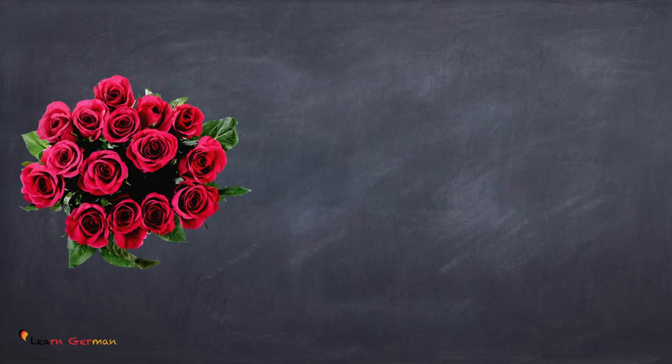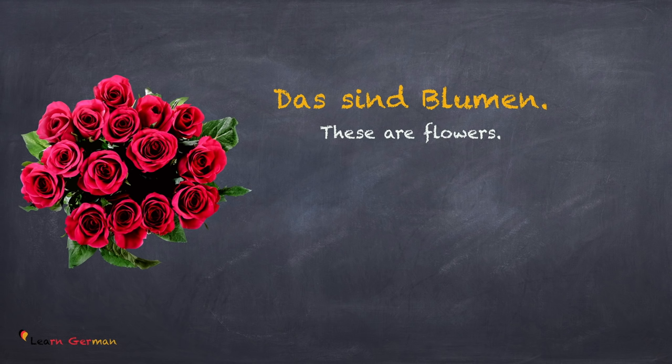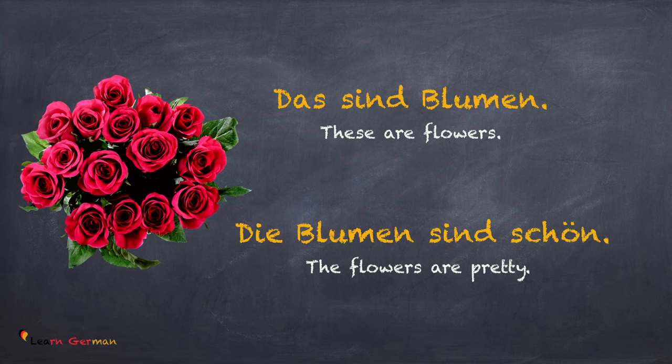Let's look at the case where we have plural. Das sind Blumen. Die Blumen sind schön. Now, since Blumen are in plural, you cannot say 'eine' or 'ein'. Hence, in the case of plural, there is no unbestimmte article.